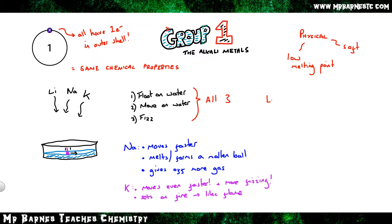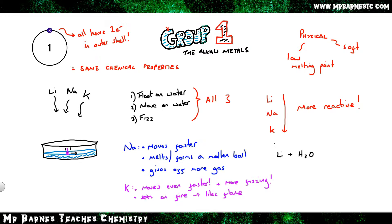Lithium is the least reactive because it only floated, moved, and fizzed. Sodium is the second most reactive because it moved faster, gave off more gas, and formed a molten ball. Potassium is the most reactive because it set on fire. There are two ways you'll be asked to describe these reactions: what happens when you put them into water, and word equations.